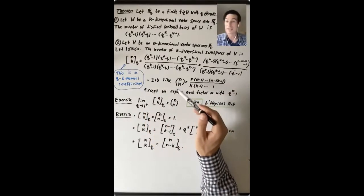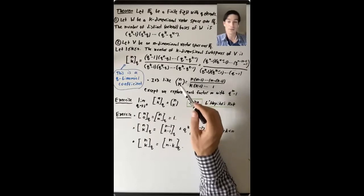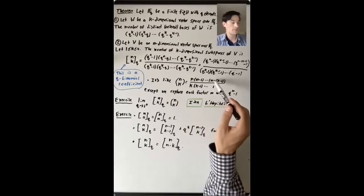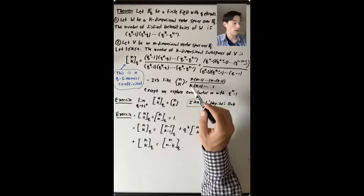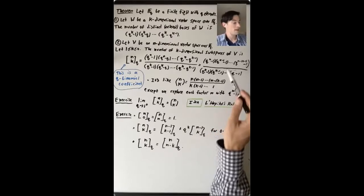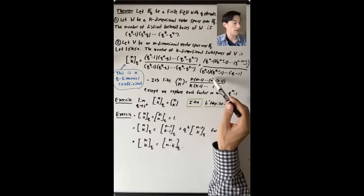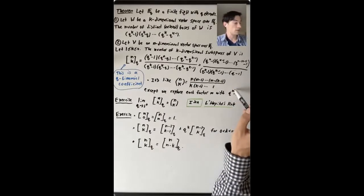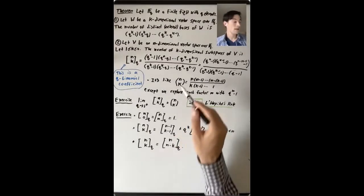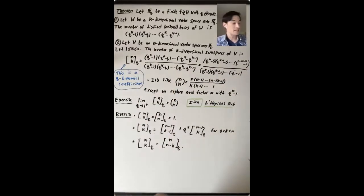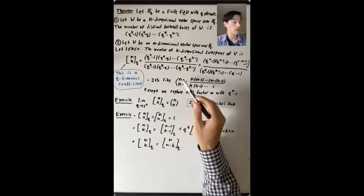Why is this like a binomial coefficient? The regular binomial coefficient n choose k is the product n times (n-1) times (n-2) times ... times (n-k+1), over k factorial. In the q-binomial coefficient, every time we see a factor of m in the numerator or denominator, we instead see q^m minus 1. These q-binomial coefficients show up all over combinatorics and count all sorts of interesting things.